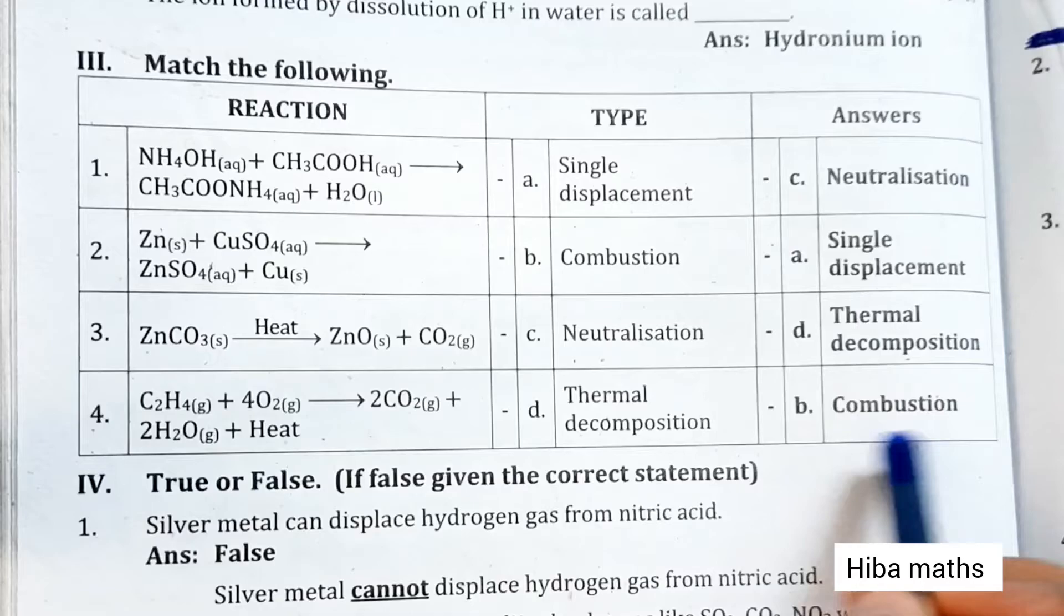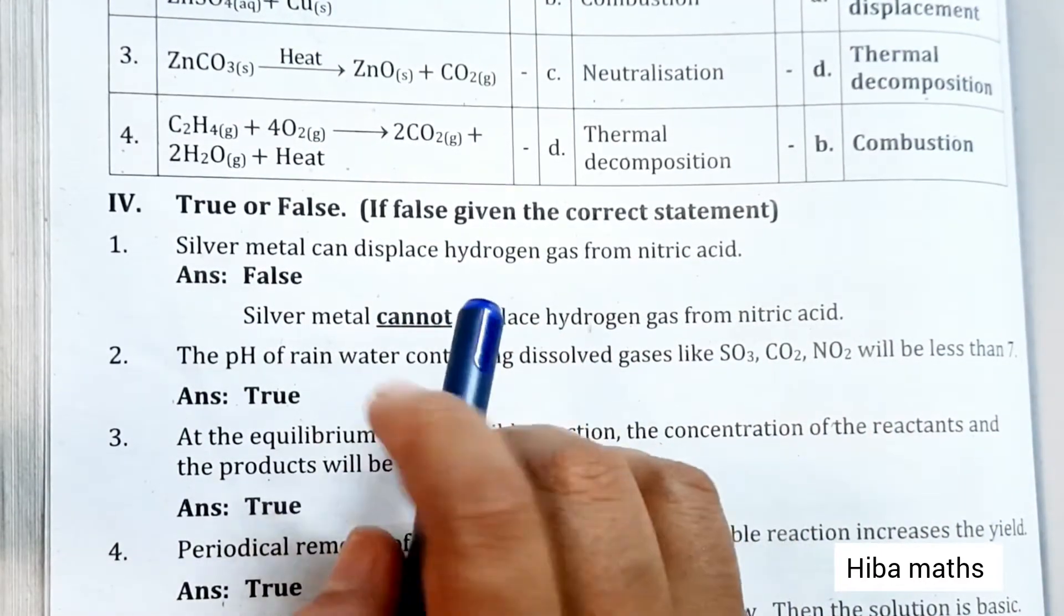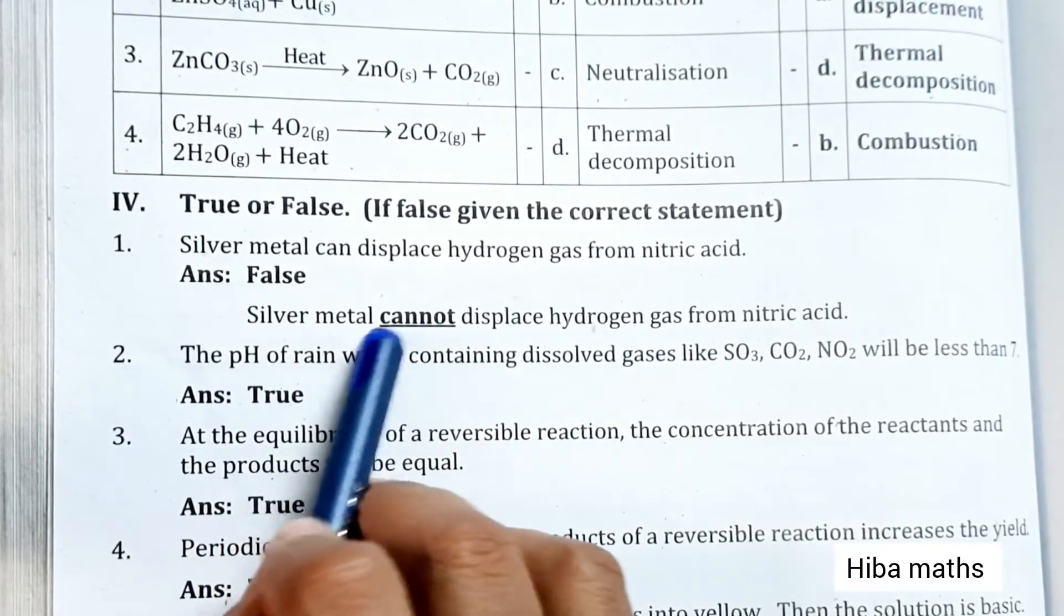True or false: Silver metal can displace hydrogen gas from nitric acid - False. Silver metal cannot displace hydrogen gas from nitric acid.